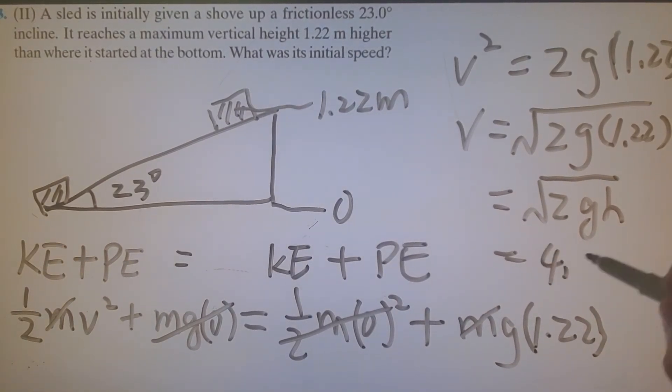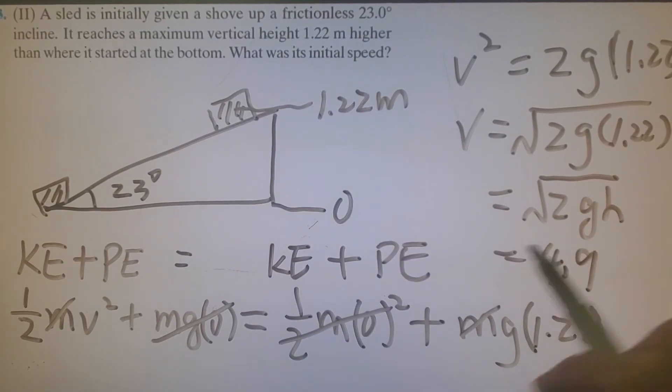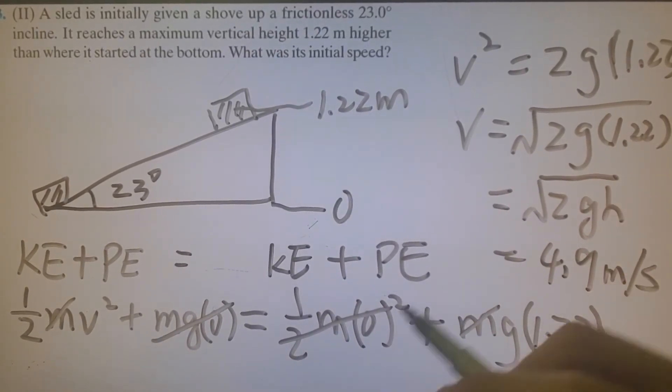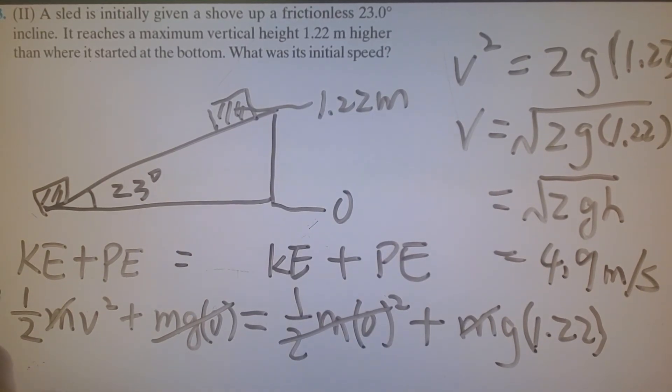So roughly equal to 4.9. Velocity should have the unit of meters per second. The lucky number for this problem is 1.